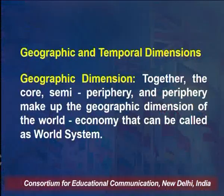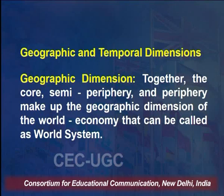There are two types of dimensions in world systems theory: the geographic dimension and the temporal dimension. Together, the core, semi-periphery, and periphery make up the geographic dimension of the world economy, which can be called one system. Geographically, all countries — core, semi-peripheral, and peripheral — make up this geographical dimension broadly known as the world system.